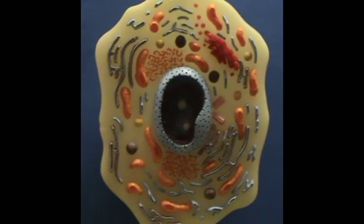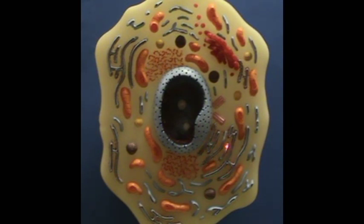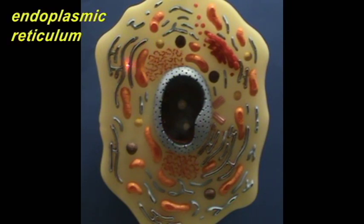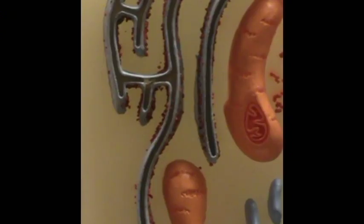Throughout the cytoplasm you can see that there is a very complex labyrinth contained by a membrane. You can see it over here, here, and throughout the cytoplasm. This would represent the endoplasmic reticulum. What you have here is an internal compartment within the cytoplasm, and this compartment is interconnected, as you can see here.